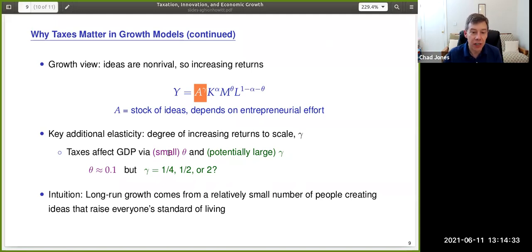Of course, taxes affect GDP via the small value of theta, according to the previous slide. But now there's this potential channel through gamma that could be large. If gamma is a quarter or a half, that's already much bigger than the 0.1. And maybe gamma is even as high as 2.